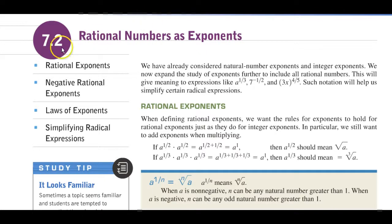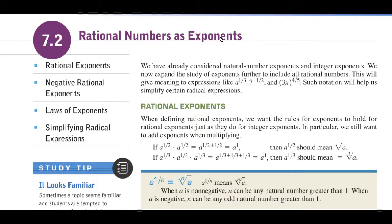Now we're going into topic 2 of chapter 7, where we will have an explanation of rational numbers as exponents. These exponents are going to be fractions, so we often think of fractional exponents. Remember, rational numbers was often a synonym for fractions. And we'll be going over these topics.